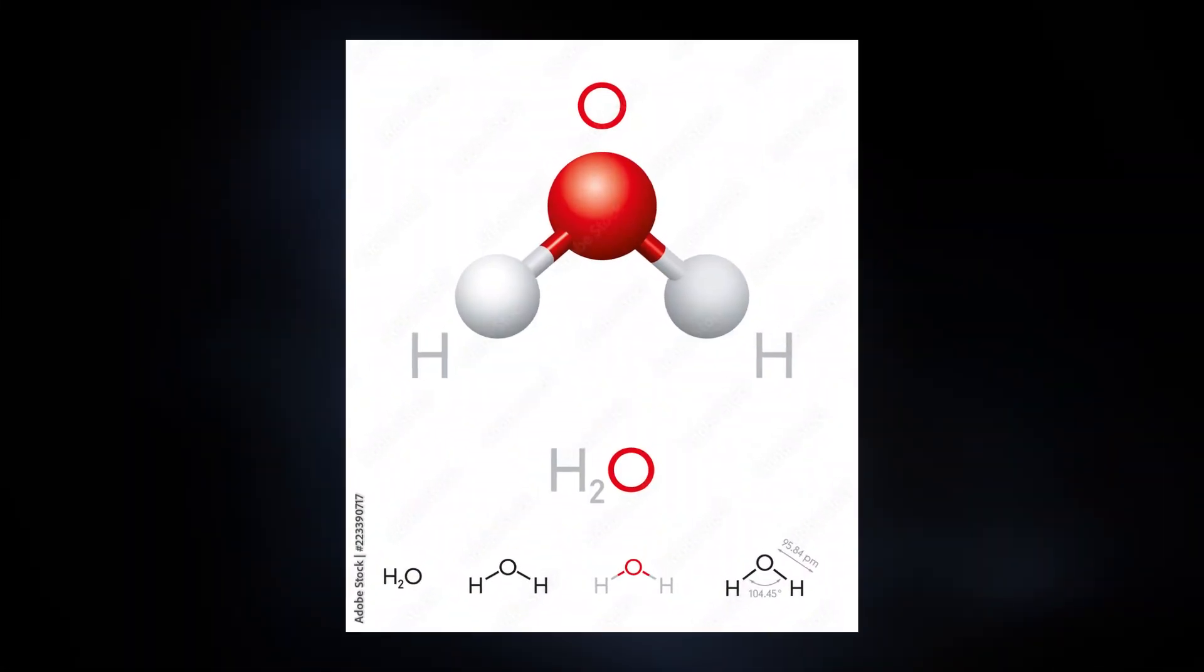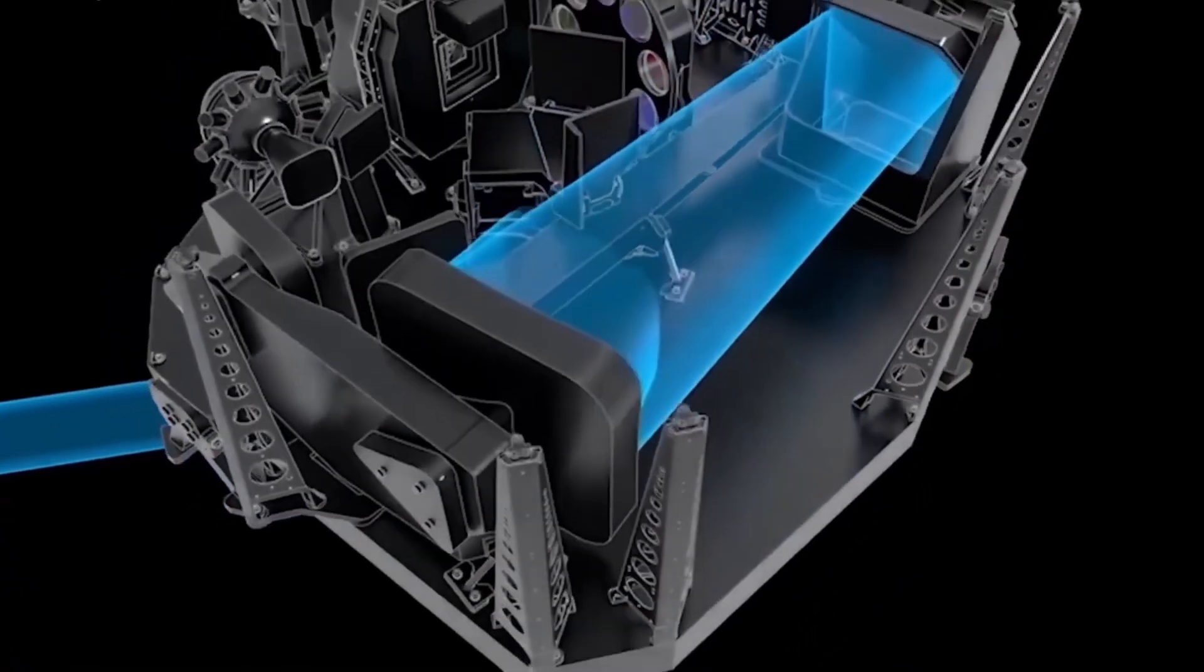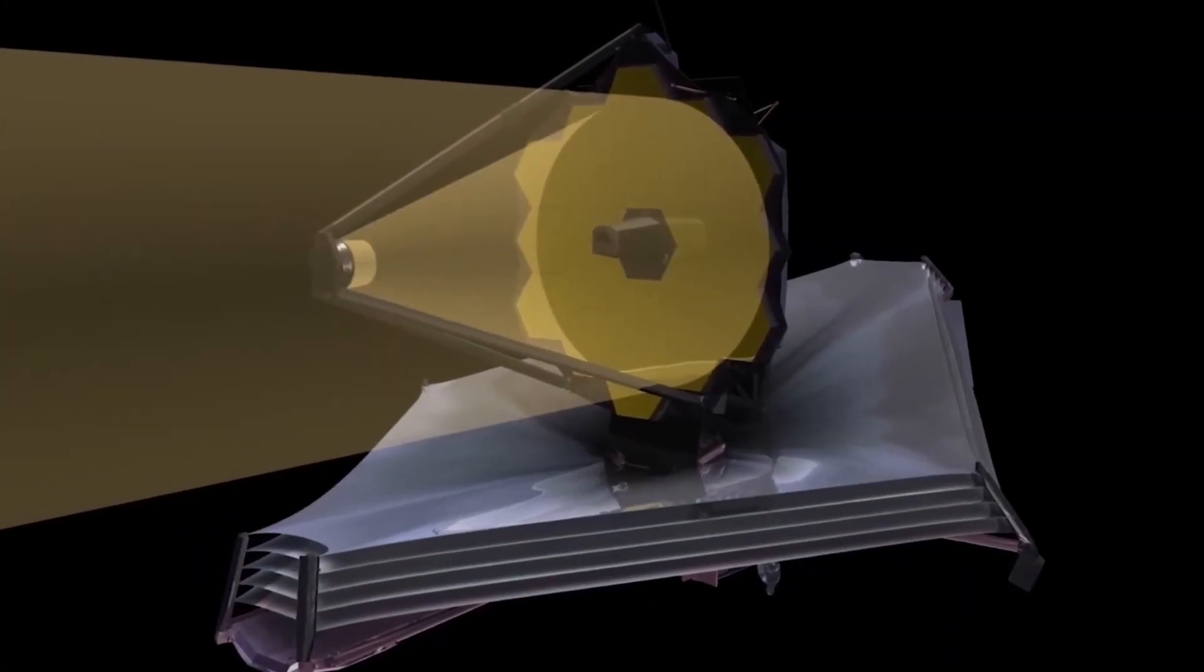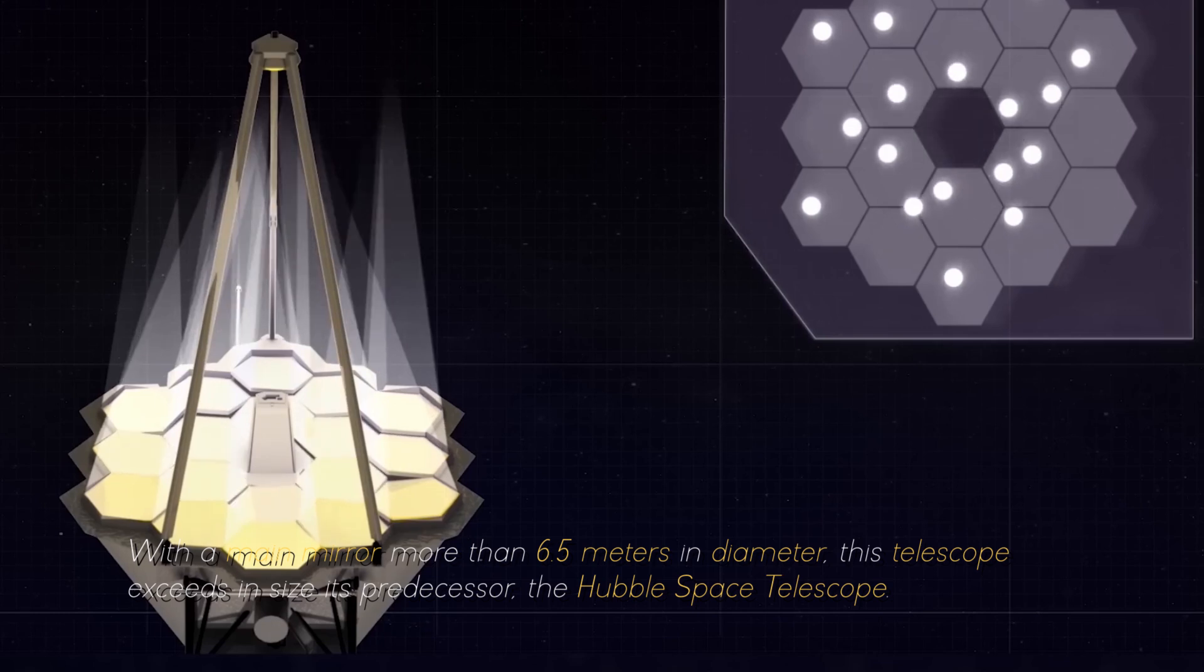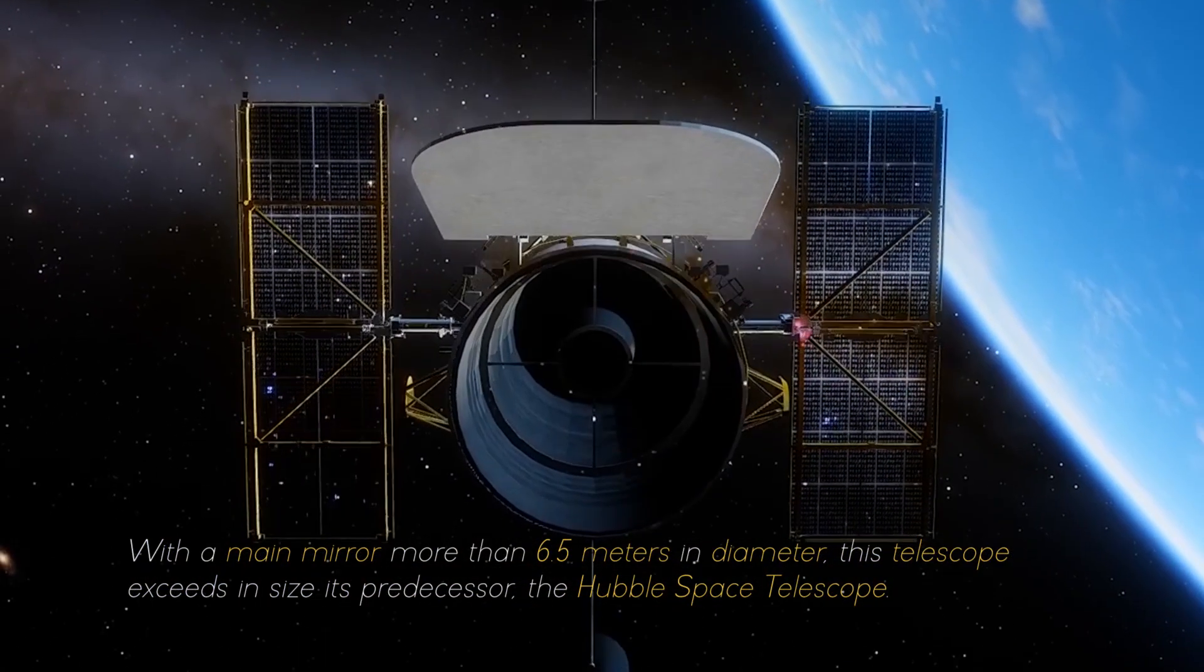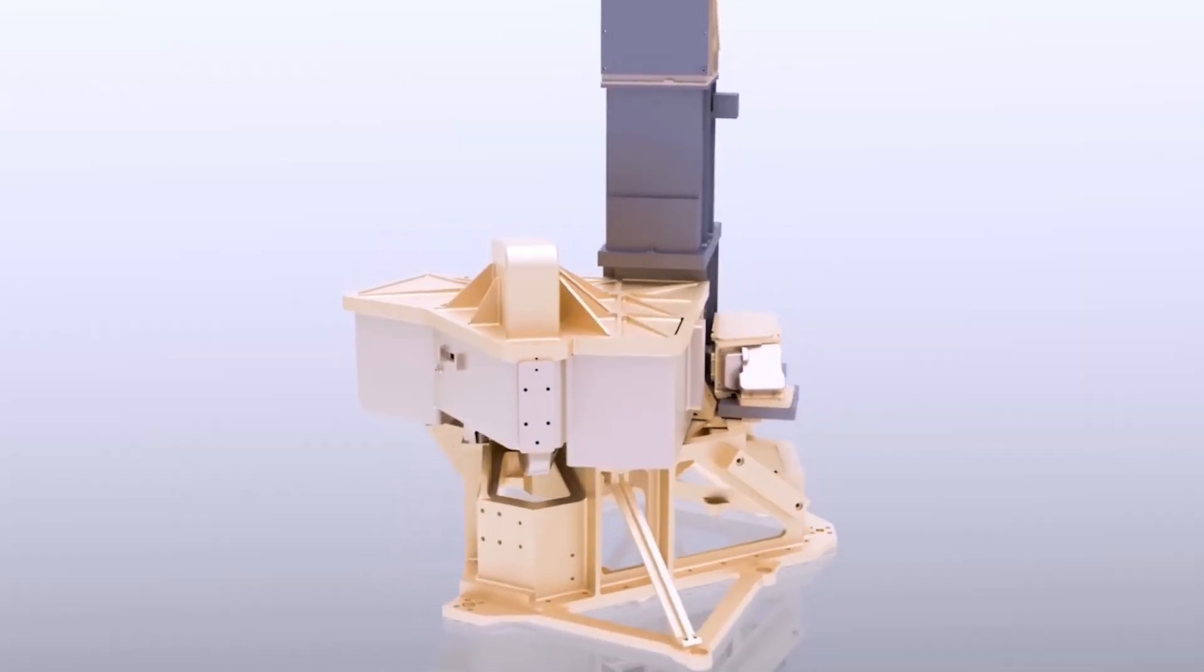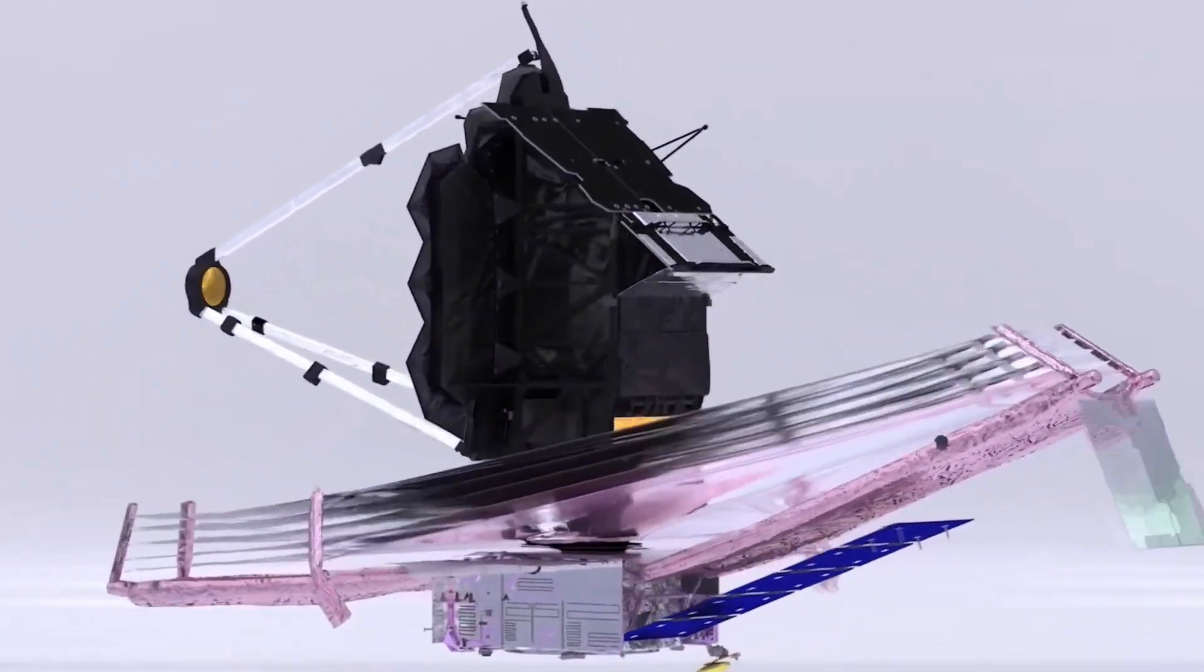What we are seeing here is the chemical signature of water vapor. The James Webb Space Telescope is equipped with an array of advanced scientific instruments carefully designed to observe the universe at an unprecedented range of wavelengths. With a main mirror more than 6.5 meters in diameter, this telescope exceeds its predecessor, the Hubble Space Telescope.